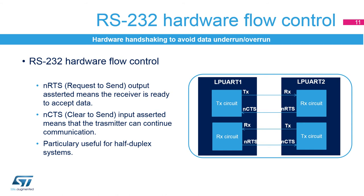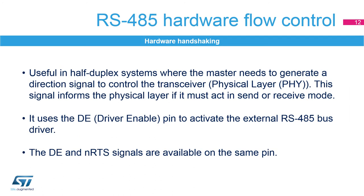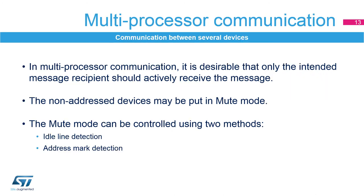Both signals are active low. For serial half-duplex communication protocols like RS-485, the master needs to generate a direction signal to control the transceiver or physical layer. This signal informs the physical layer if it must act in send or receive mode. In RS-485 mode, a control line driver enable is used to activate the external transceiver control. DE shares the pin with NRTS.